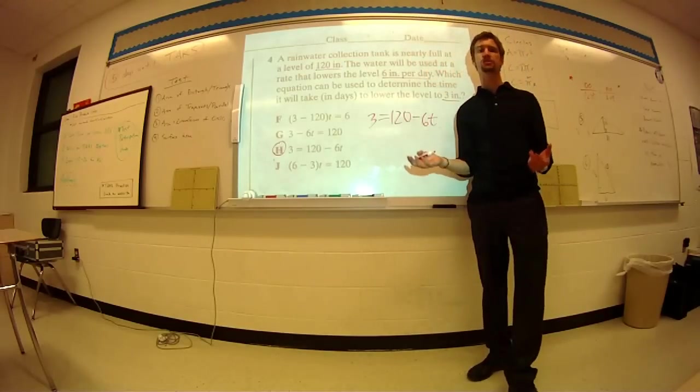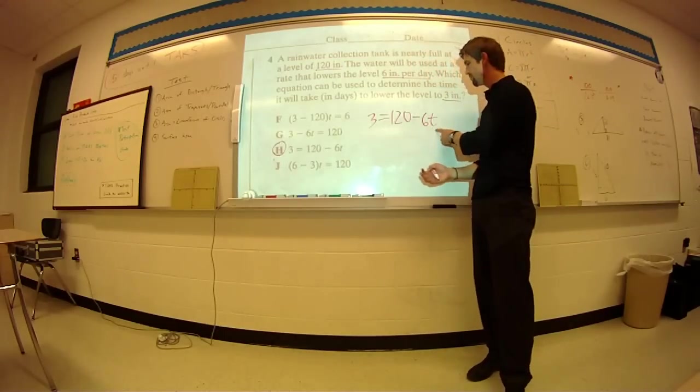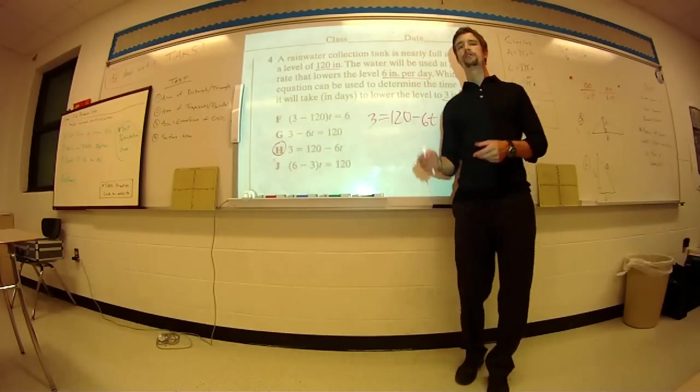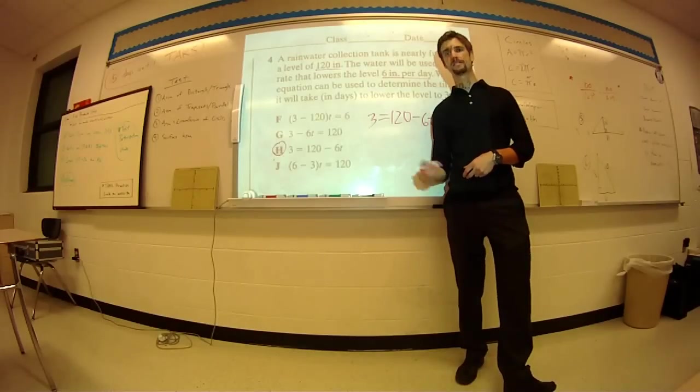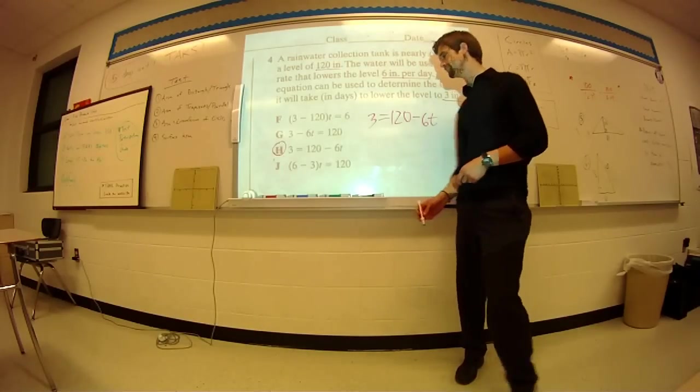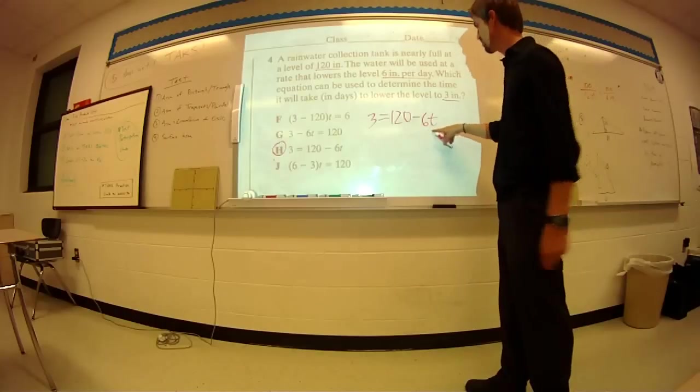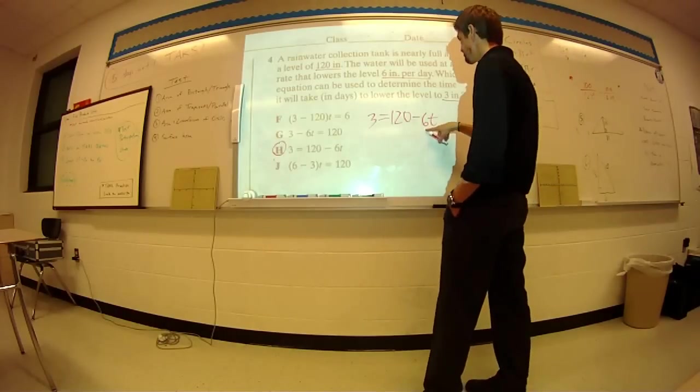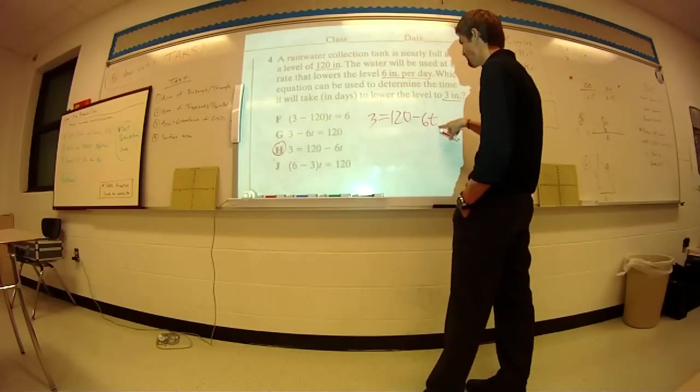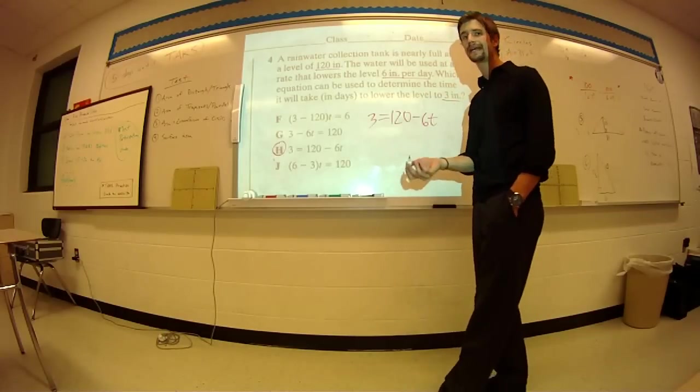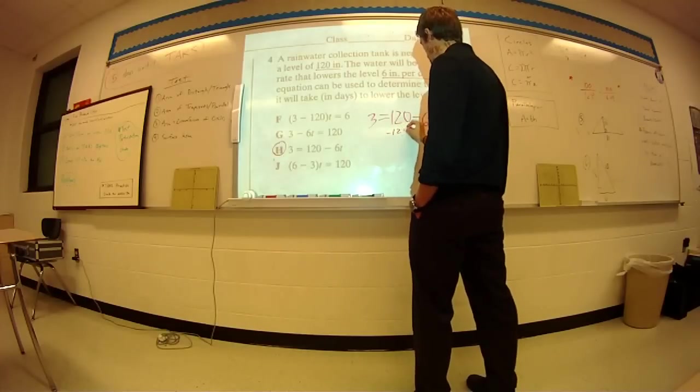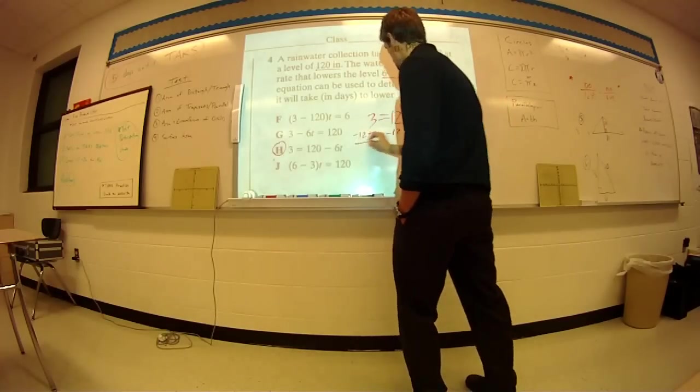You could obviously solve for T. I'm going to solve for T. You don't have to in this problem. Why don't you try to solve for T right now? So pause the video and try to solve for T, and see if you get the same answer that I'm about to get. So now I'm going to solve for T. First thing I'm going to do is get the T alone if I'm solving for this variable. Now there's going to be some negatives here, but don't worry. So you're going to subtract 120 from both sides.